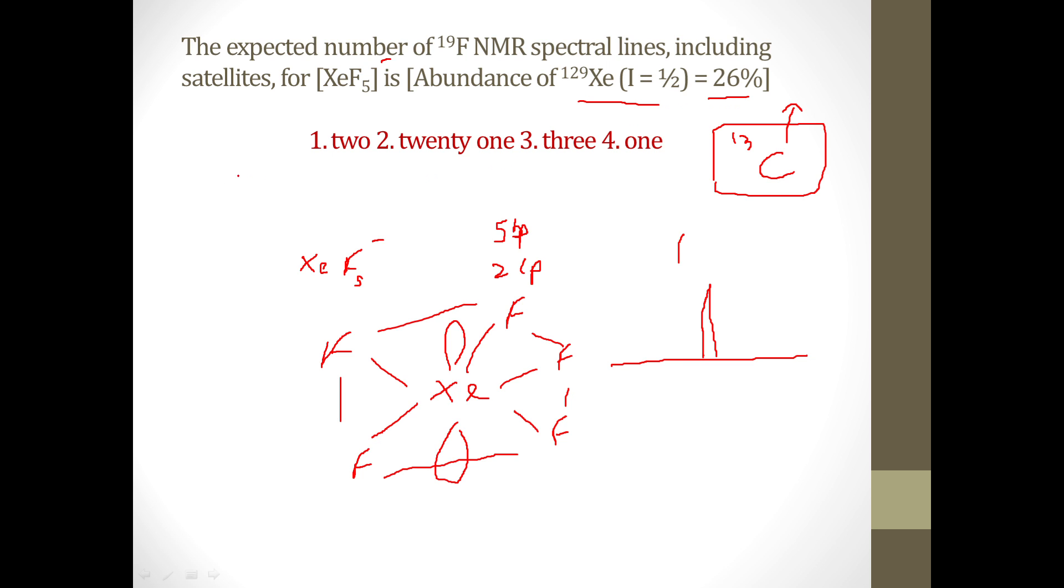That means if we see the formula 2nI+1, this is the formula 2nI+1, and n is given to be, we will take it to be equal to 1. So 1, and 2 into 1, and spin is given half, so half plus 1. So this will be equal to 2.